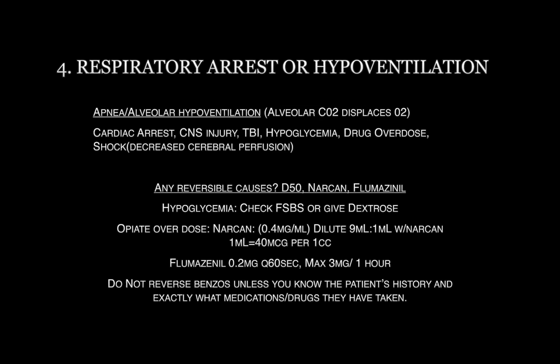Another reversible cause is opiate overdose — administer Narcan, and if it works, you have a solution. You may still need to intubate these patients, but try the reversal agent first. The last reversible cause is benzodiazepine overdose; there is an antidote, flumazenil. However, I use this less often than Narcan because the patient may be on chronic benzodiazepines or have a seizure disorder — in those cases, avoid flumazenil. The instance where I might give flumazenil is a benzodiazepine-naive patient who just took benzodiazepines, where reversal may be safe. Be very cautious before administering flumazenil.